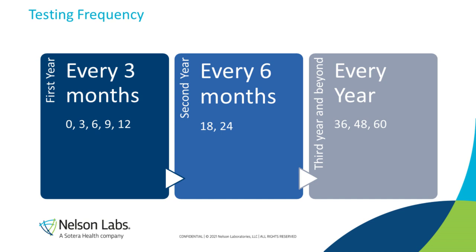The testing frequency is outlined in the IHC guidelines. For the first year, we pull and test samples every three months: baseline or time zero, three months, six months, nine months, and twelve months. Then the second year, the frequency goes to every six months — 18 months and 24 months. Beyond that, you pull and test annually. At some point, you either stop testing and call that the expiration date, or you start having failures and call the longest time point without failures the expiration date.